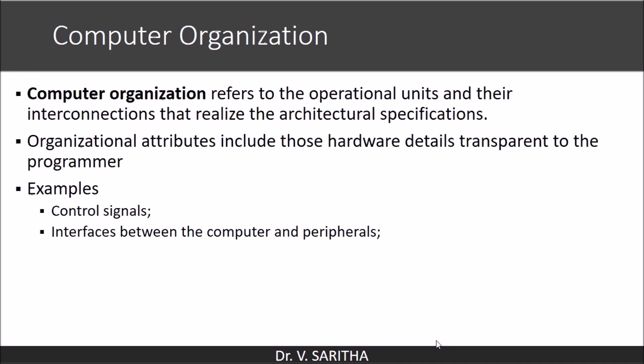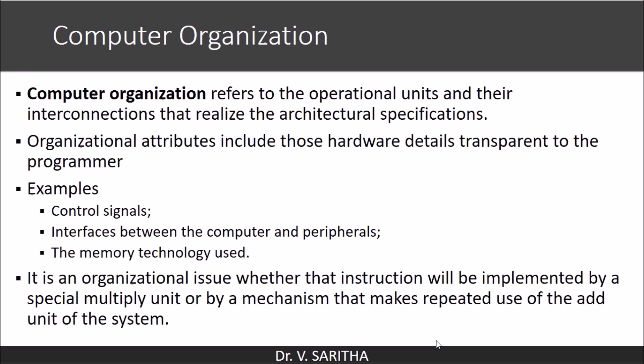For example, control signals — how and what type of control signals will be generated for performing a particular operation need not be known by the programmer. Similarly, interfaces between the computer and peripherals, and the memory technology used — a programmer need not know the type of technology used in the construction of memory in order to write a program. It is an organizational issue whether an instruction will be implemented by a special multiply unit or by a mechanism that makes repeated use of the add unit.